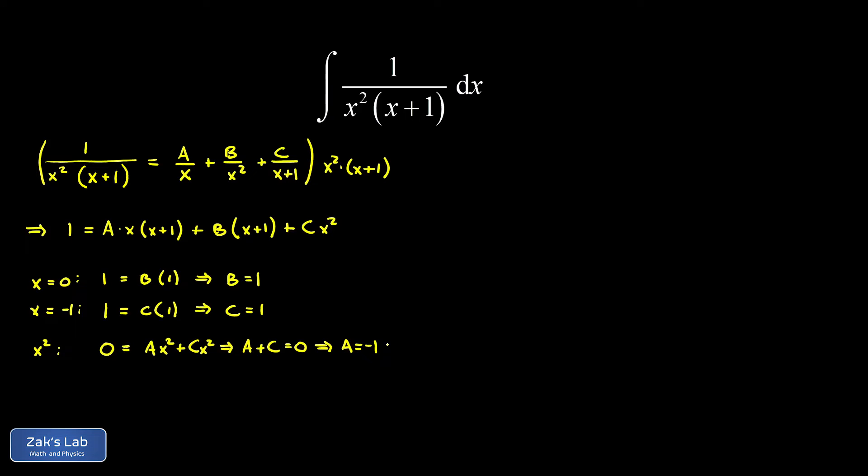We've solved our partial fractions decomposition. Now the point is to replace our integrand with this decomposition in terms of three simpler fractions. Our integral becomes the integral of negative 1 over x plus 1 over x squared plus 1 over x plus 1.